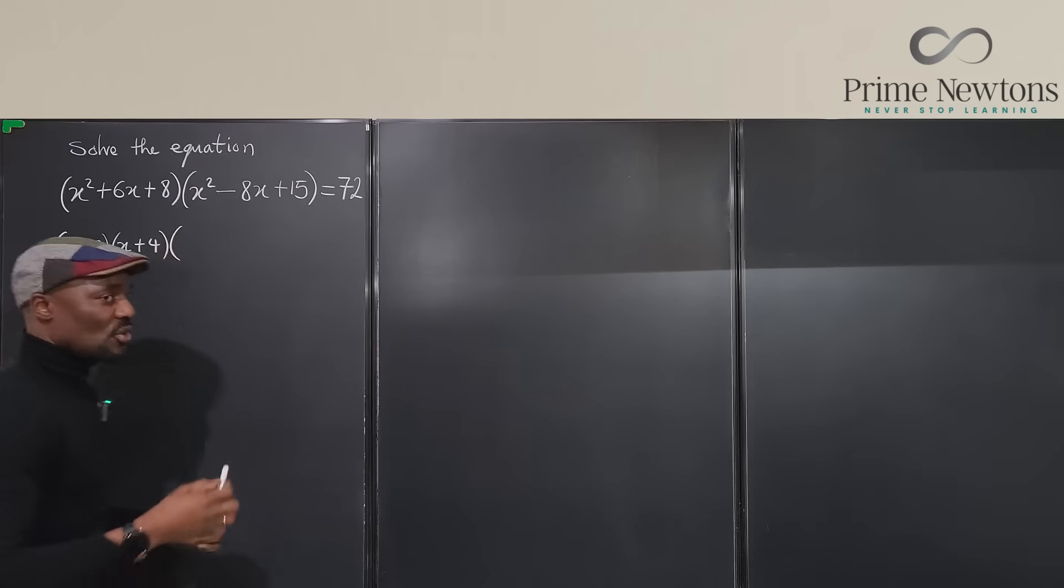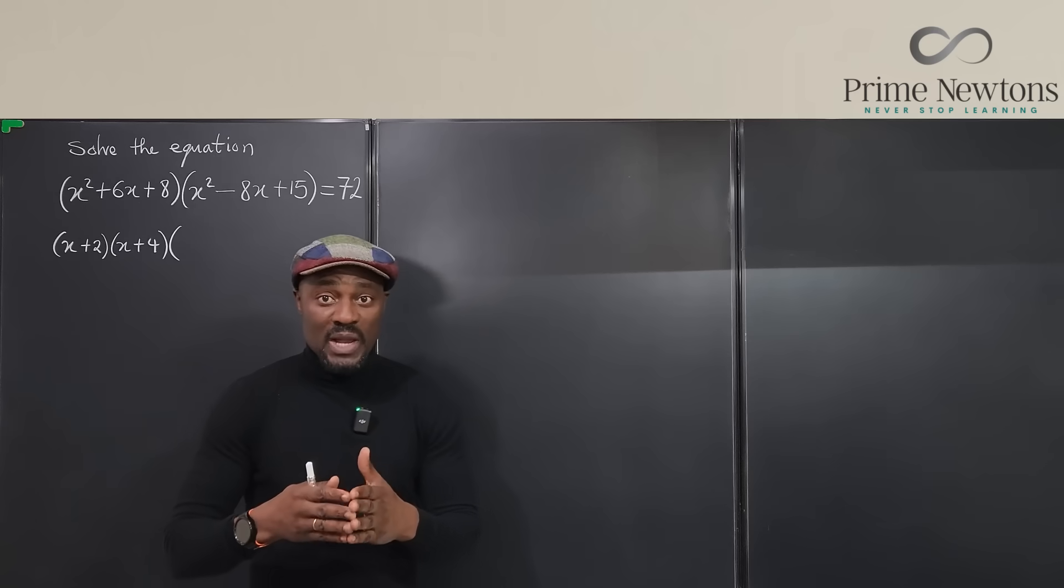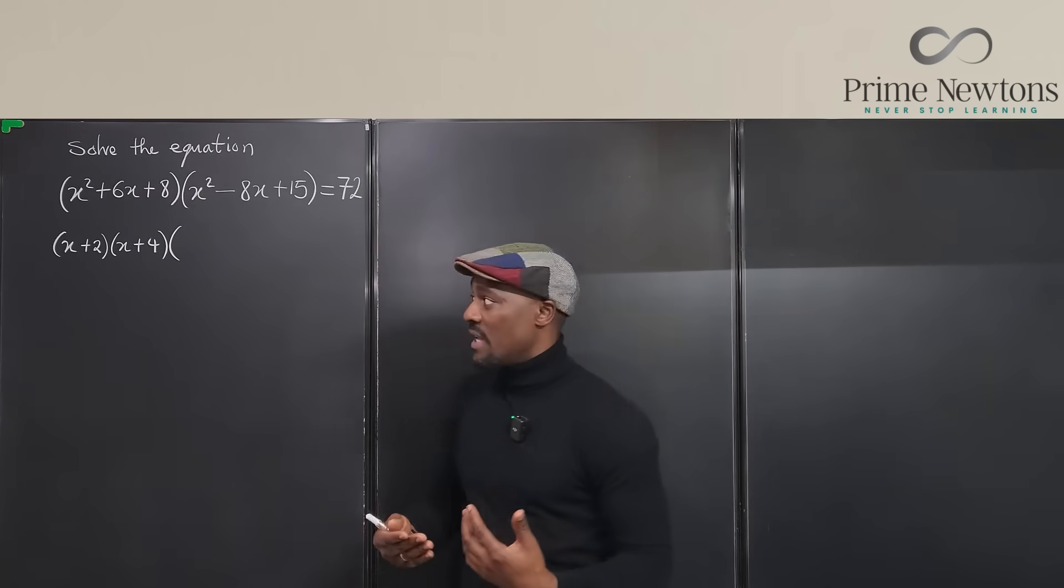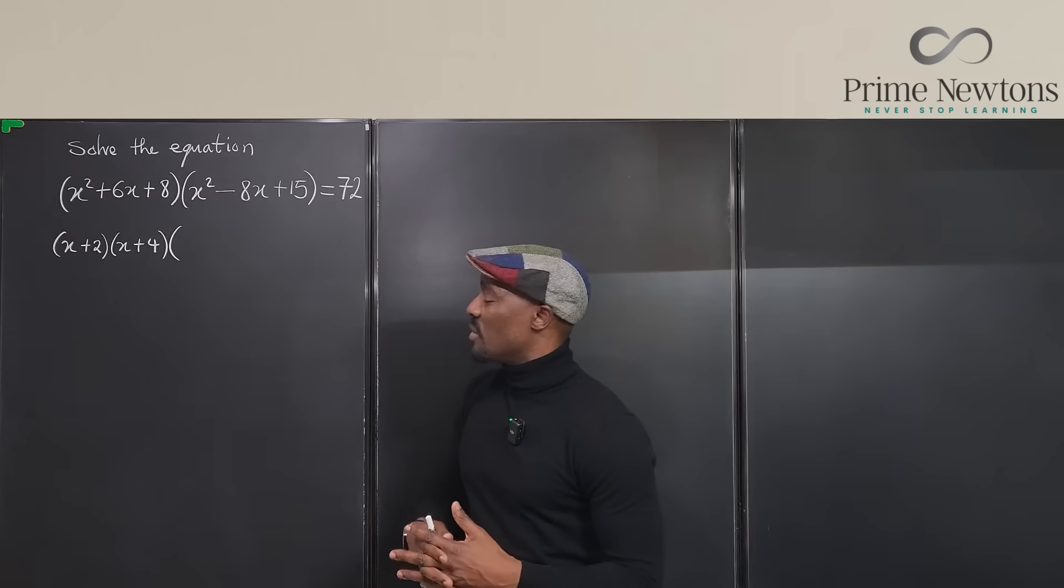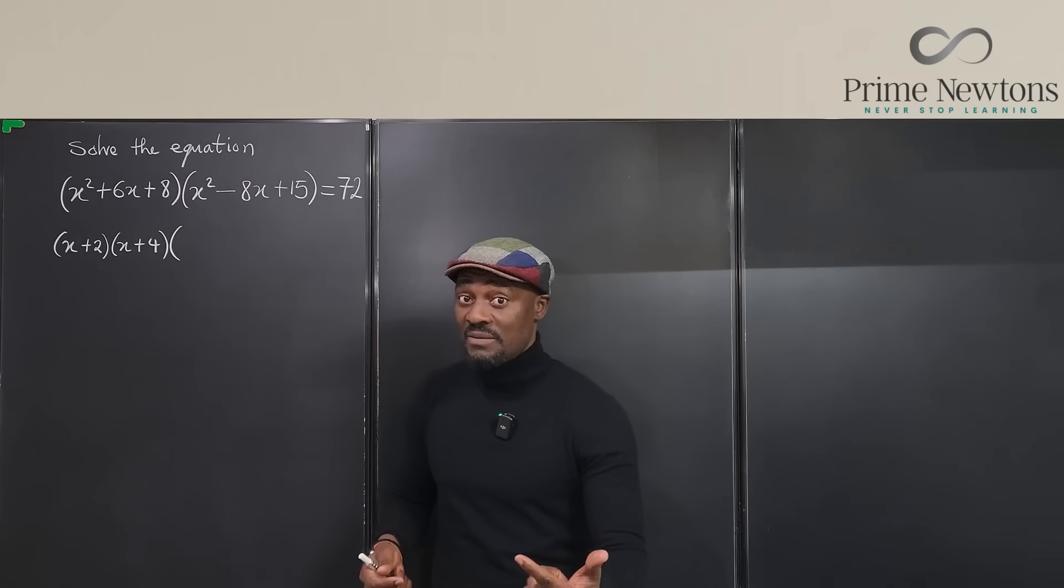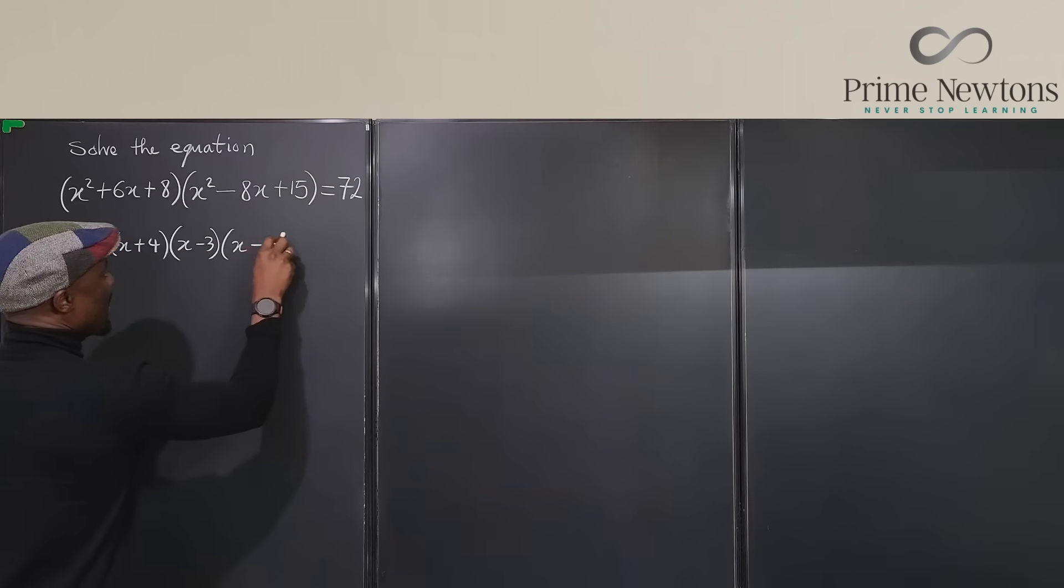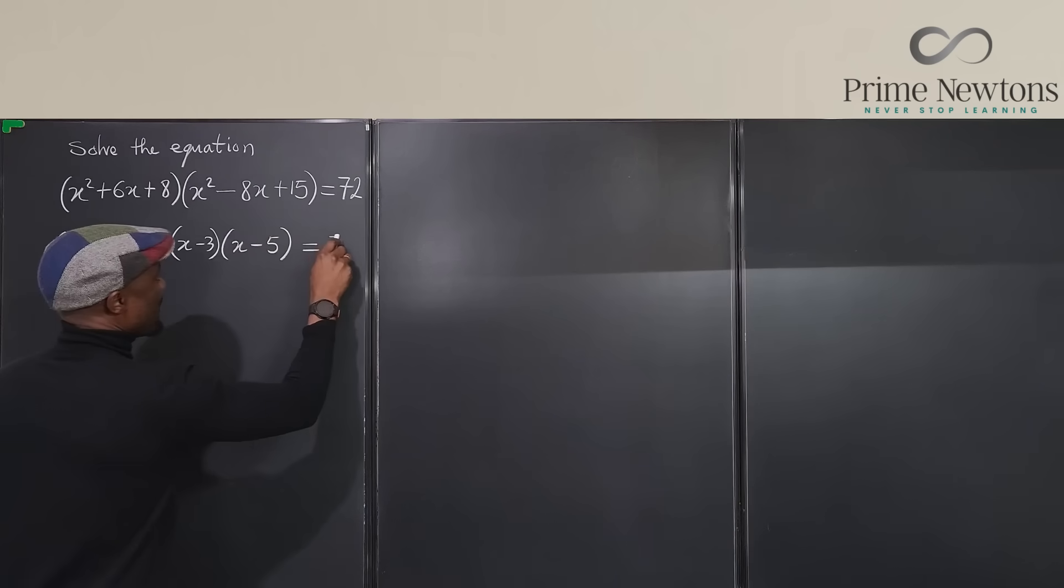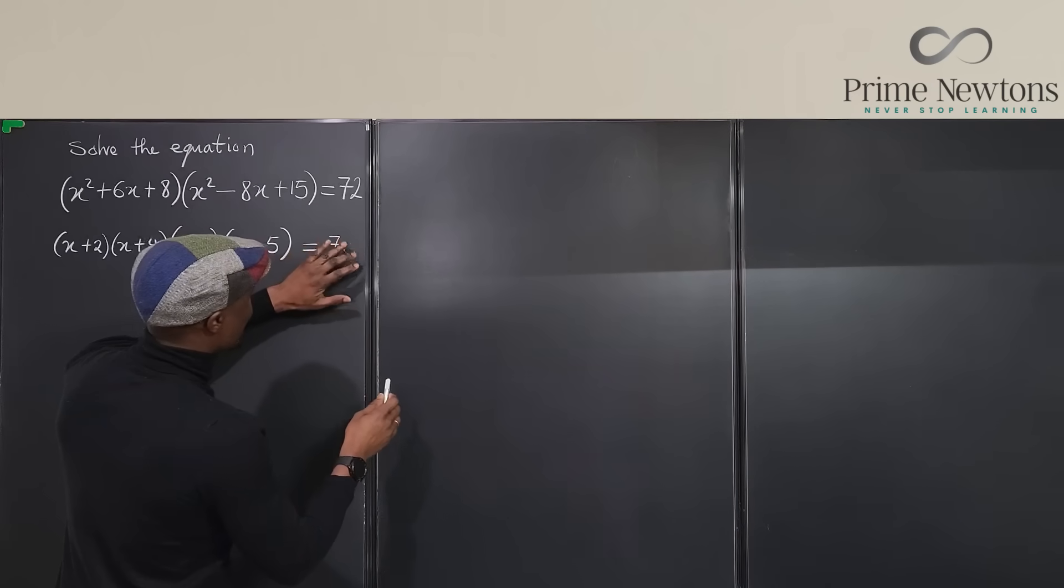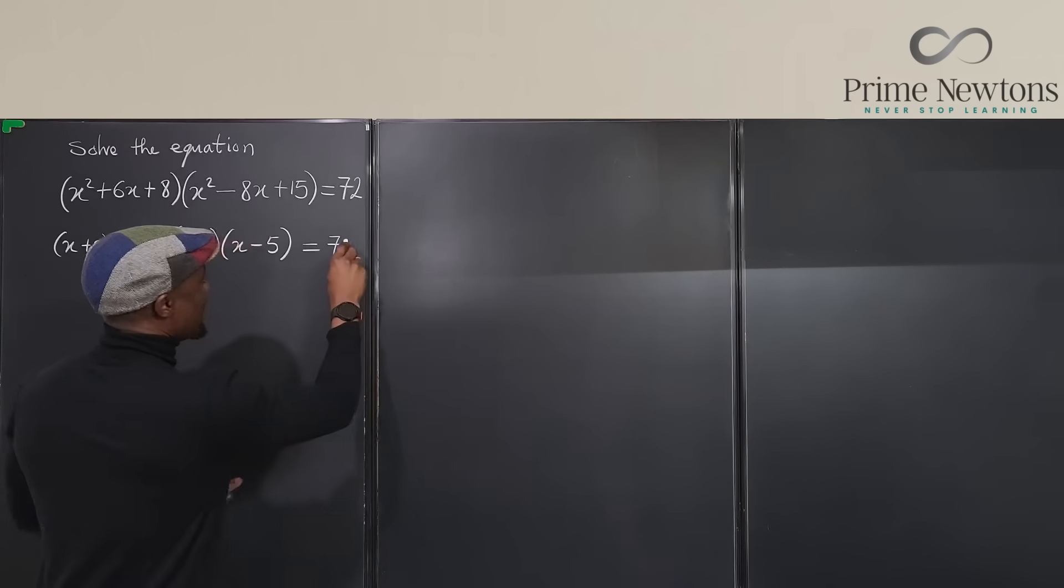The second quadratic, I'm looking for two numbers that multiply to 15, add up to negative eight. Well, those two numbers must be negative three and negative five. So I'm going to have x minus three and x minus five, but I still have this 72. Zero is coming to my mind. 72.